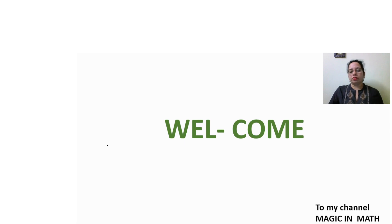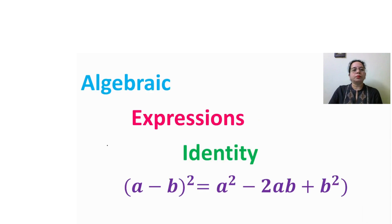Hello friends, welcome to my channel. We are dealing with the topic algebraic expressions — the identity (a minus b) whole square is equal to a square minus 2ab plus b square.